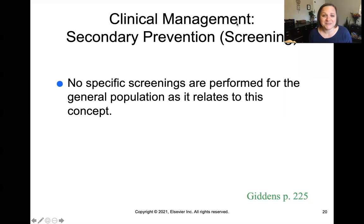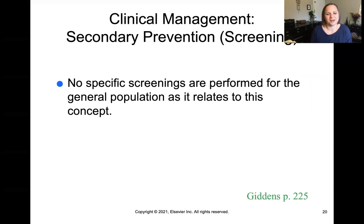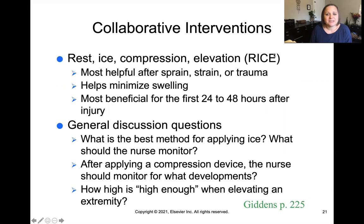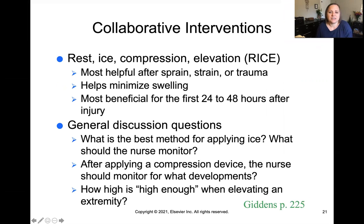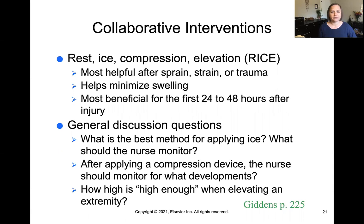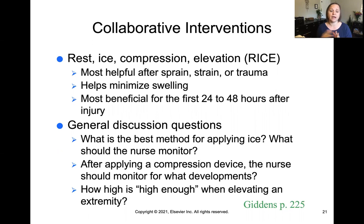There are really no secondary prevention measures for inflammation specifically as it pertains to the general population. But there are collaborative interventions when inflammation is apparent. The first, if you're an athlete, you're probably familiar with — it's RICE: Rest, Ice, Compression, Elevation. For a localized injury like a sprain or trauma, RICE minimizes swelling and pain. Because the inflammatory response happens immediately after an injury, it's most beneficial in those first day or two after injury.